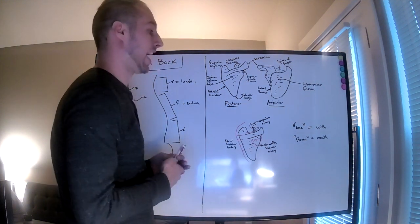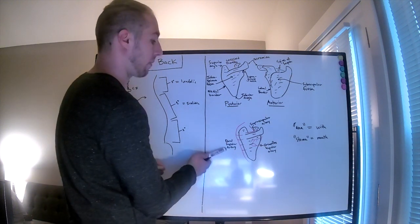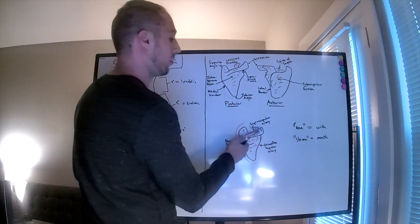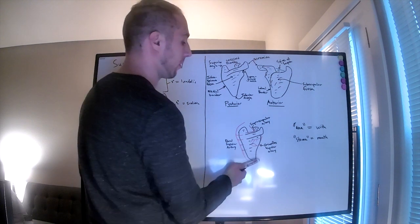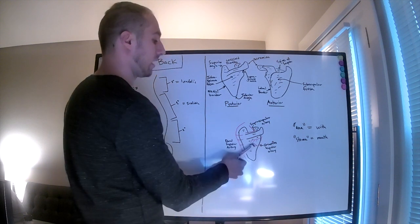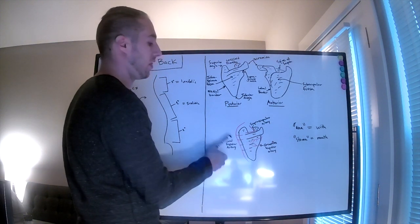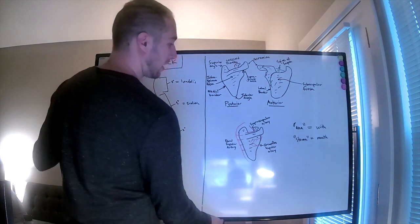The three big anastomoses for the scapula will be the dorsal scapular artery, the suprascapular artery, and circumflex scapular artery. These will feed the muscles in the area, and if one were to become blocked, then one of the other arteries could take over.